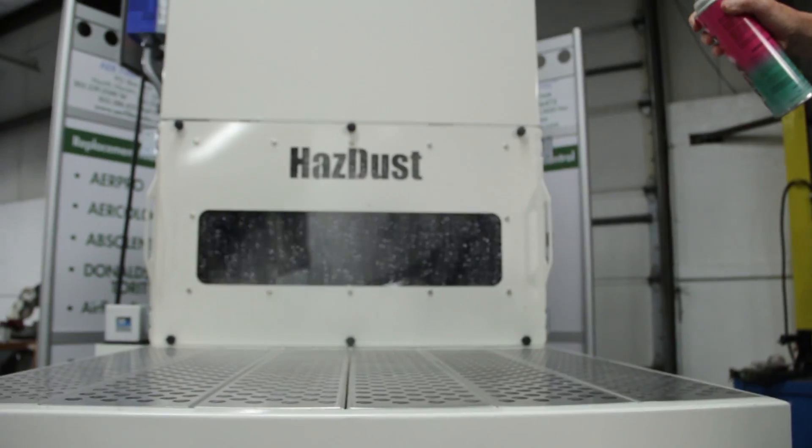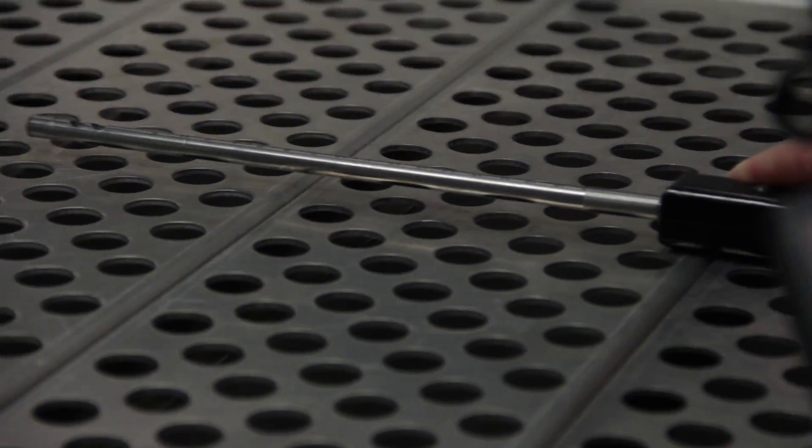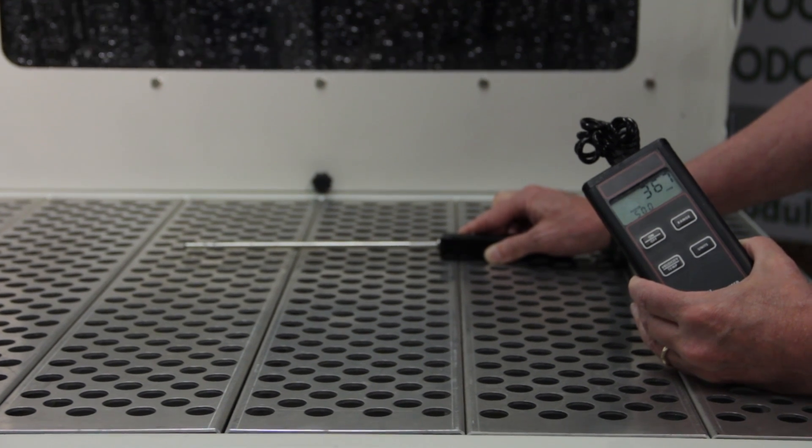High efficiency mist eliminator will remove any water spray so the discharge air has very low moisture. Aluminum non-sparking blower provides high velocity at the tabletop, minimum of 325 feet per minute.